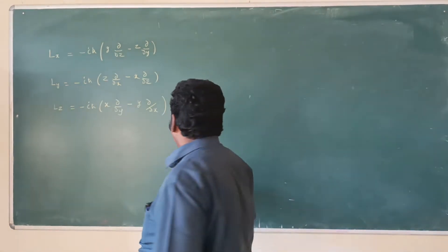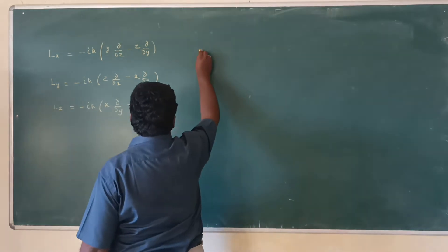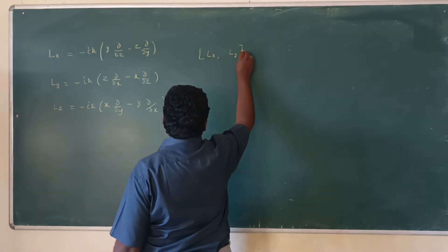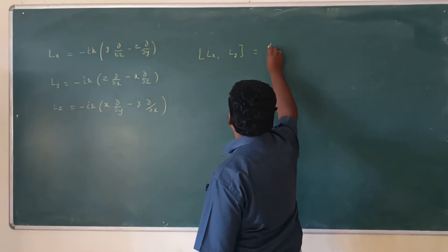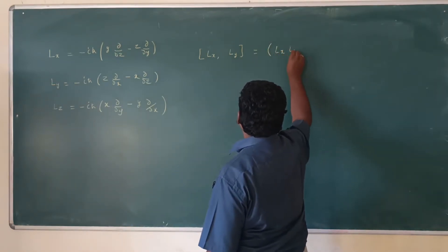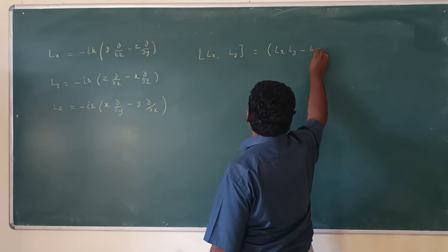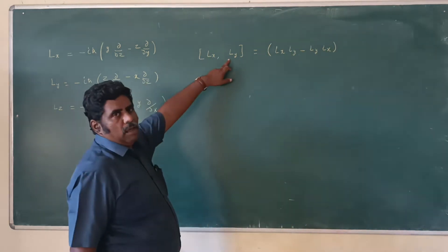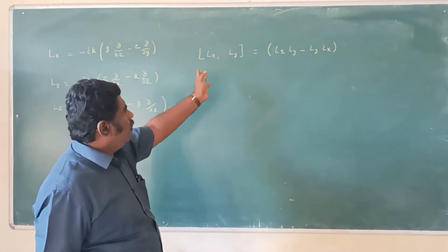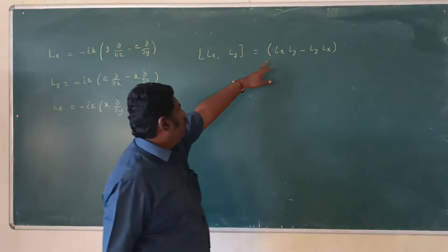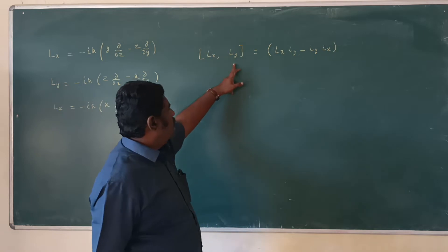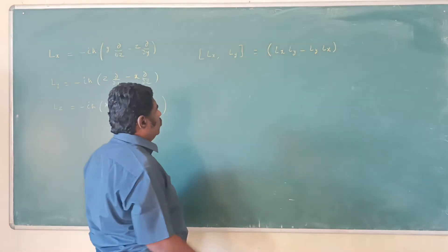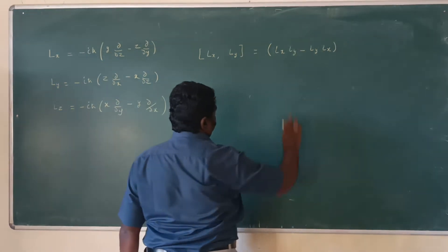If we want to calculate the commutation relation between Lx and Ly, this should be expanded as [Lx, Ly] = LxLy − LyLx. Here Lx and Ly are written in the square bracket. To expand, we use the ordinary commutator form: LxLy − LyLx. First, we should find out the value of LxLy.